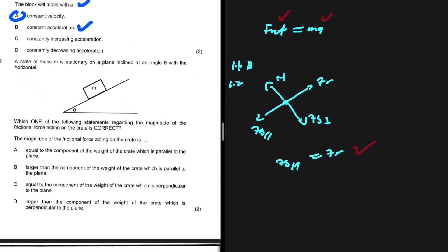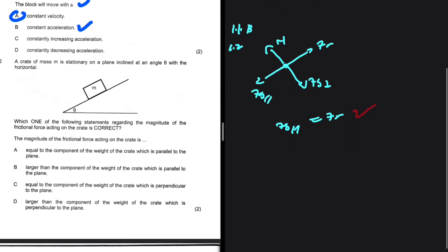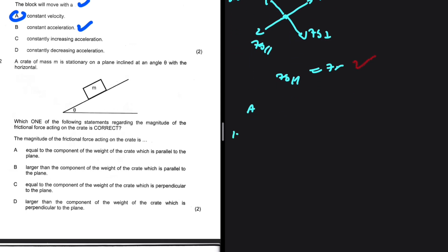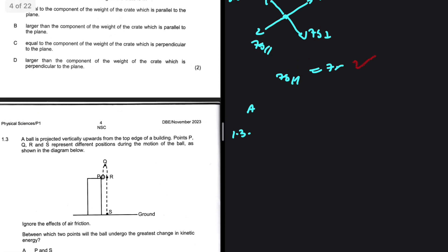Let's hear the stories. The magnitude of the frictional force acting on the crate: the first option says equal to the component of the weight of the crate which is parallel to the plane. We don't have to go any further. That is what we are saying, so the answer to 1.2 is A.